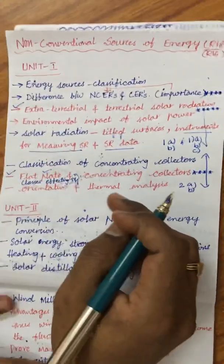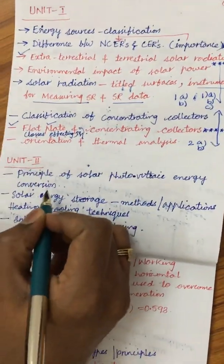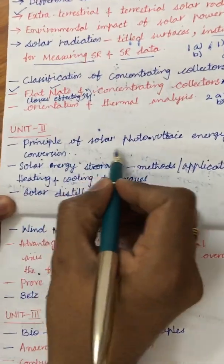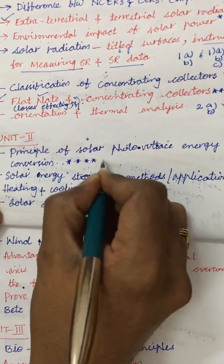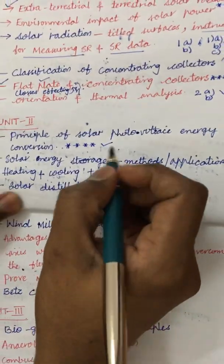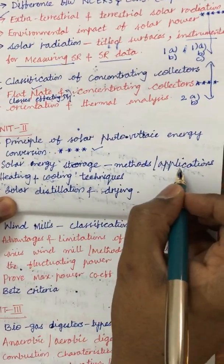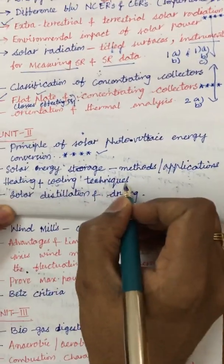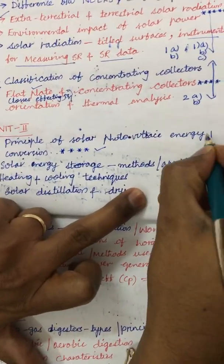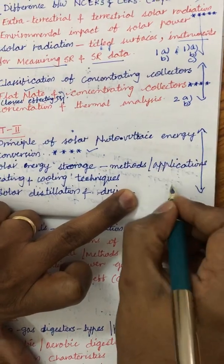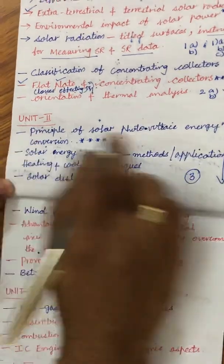This covers all of Unit 1 — please concentrate as it is entirely theory. The second unit is all about the principle of solar photovoltaic energy conversion, which is a very important expected question. Solar energy storage, its methods and applications, heating and cooling techniques, and solar distillation and drying are also important concepts. You will be getting the third question — an A/B split of 8 and 7 marks — from these topics.